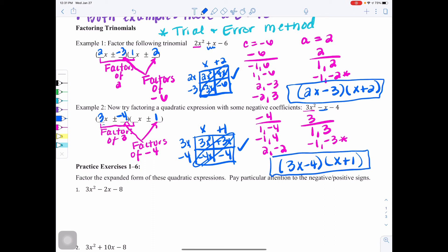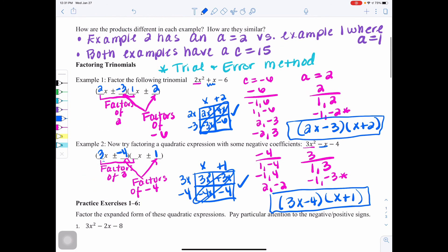So that's how the trial and error process works when you're factoring trinomials when a is not equal to 1. And let's go back up next to trial and error and put a is not equal to 1 so that you remember that that's the process for these types. Now at this time, if your teacher has given you a separate practice activity, you can stop the video and go complete that practice. If they would like you to complete the practice within the notes, then please pause the video, try practice exercises 1 through 6, and then resume the video when you're ready to go over your answers.